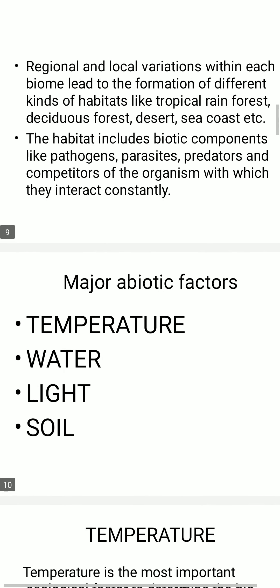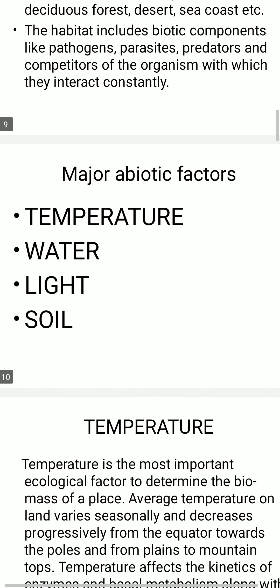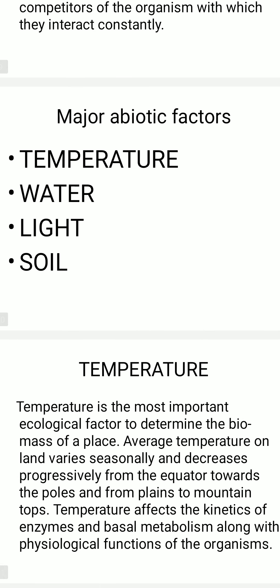There are four major abiotic factors: temperature, water, light, and soil. Temperature is one of the most vital ecological factors that determines the biomass of a place. Biomass is the total dry weight of organisms without moisture — for example, the ash obtained after burning a plant along with its roots, excluding water content.